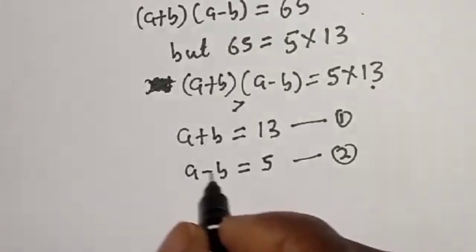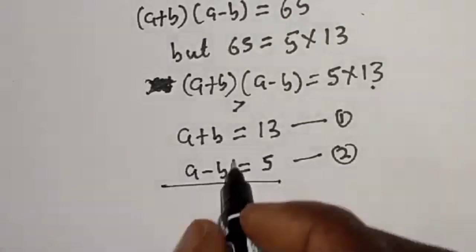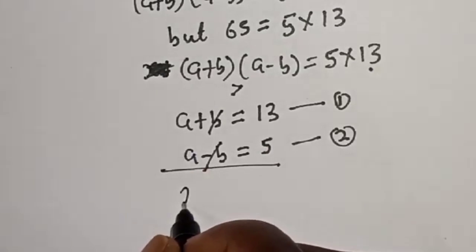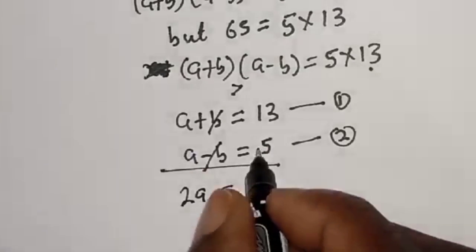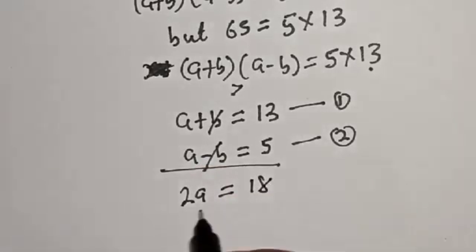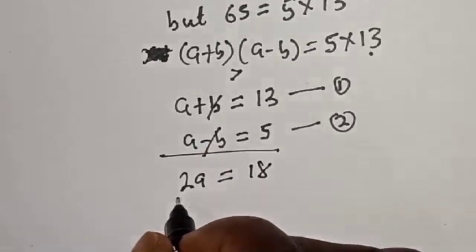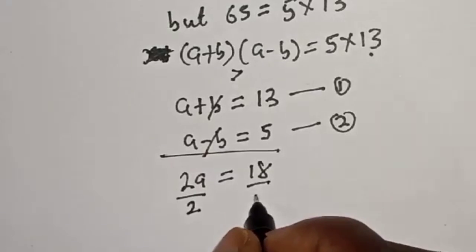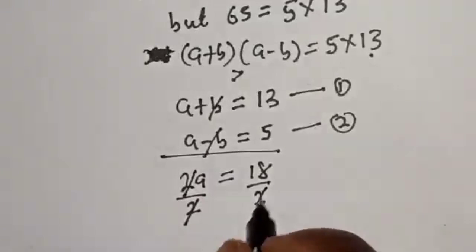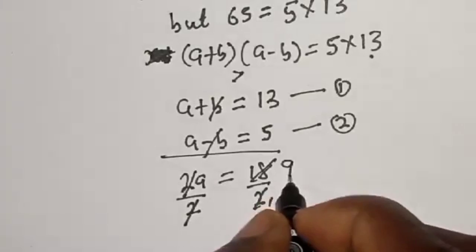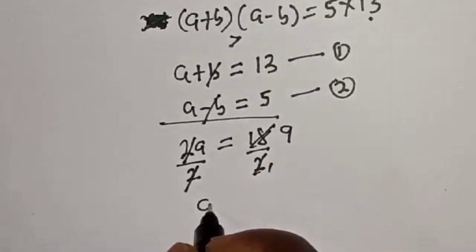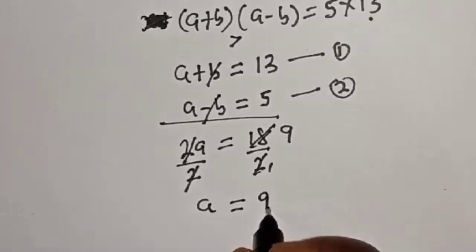Let's add equation 1 and equation 2 together. The B terms cancel, giving 2A is equal to 13 plus 5, which is 18. Dividing both sides by 2, A is equal to 9.